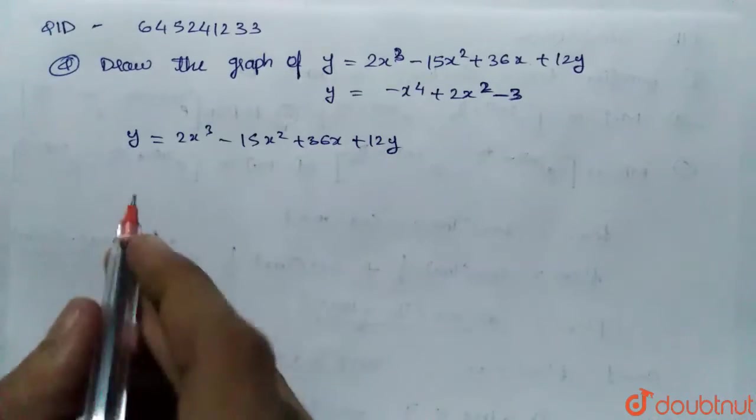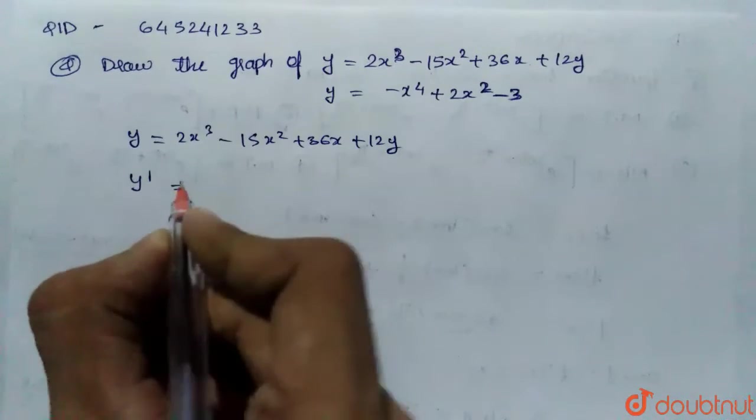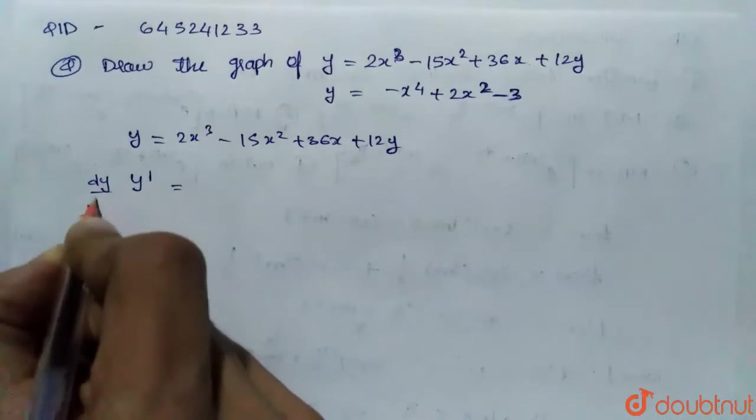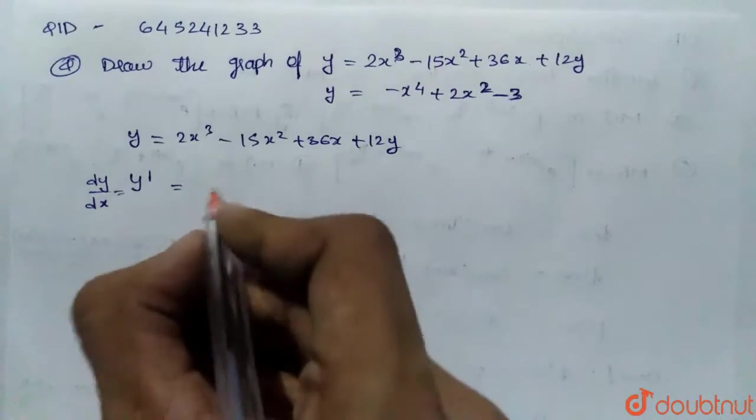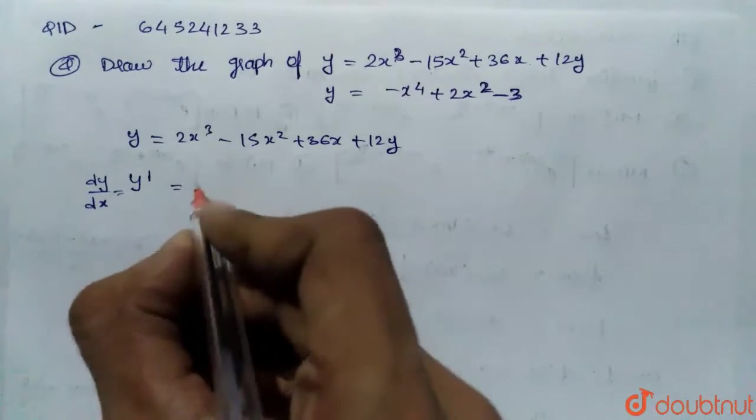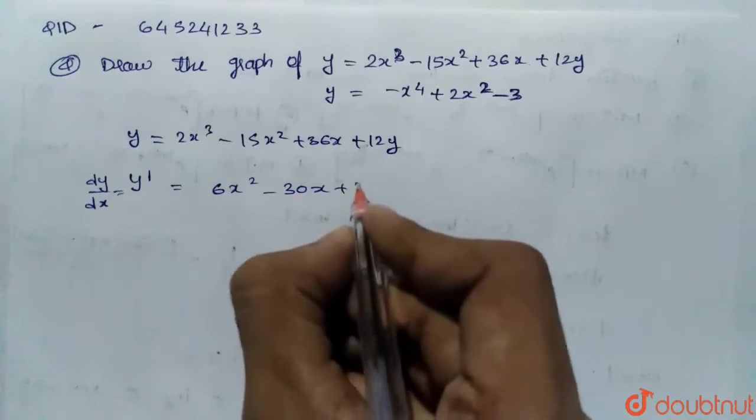In this case, first we would calculate y' to get what is the points at which the curve is actually changing its path. If we do dy/dx, we would get 6x² - 30x + 36.